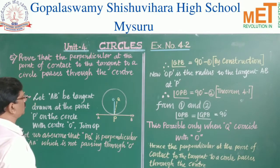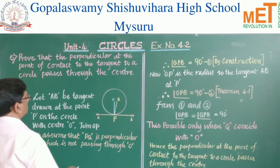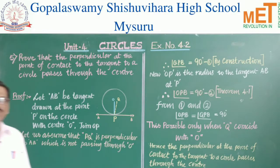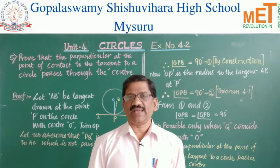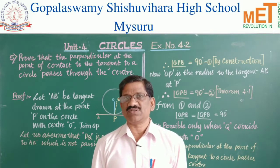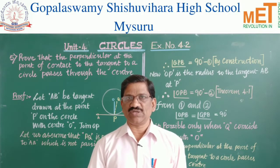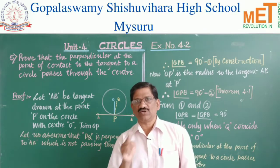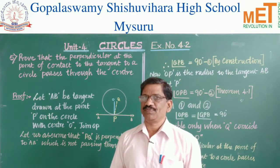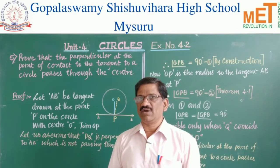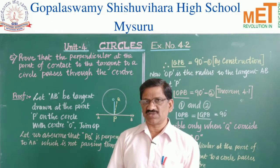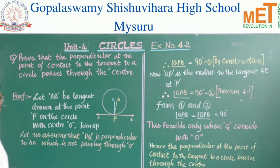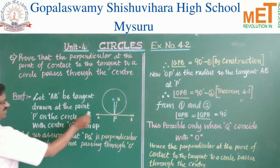We have to prove that the perpendicular drawn from the point of contact passes through the center of the circle. We will prove this by the contradictory method — first assuming that it does not pass through the center, then showing that it must. This method of proving is called the contradictory method. Let AB be the tangent drawn at point P on the circle with center O; join OP.